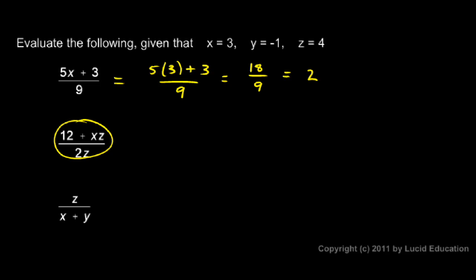Okay, the next one: 12 plus xz over 2z. Let's rewrite it. 12 plus, instead of x, we'll put in a 3. So that's 12 plus 3 times z, and instead of z, we'll write 4. So this is 3 times 4 divided by 2z. Well, again, z is 4, so instead of 2 times z, I have 2 times 4.